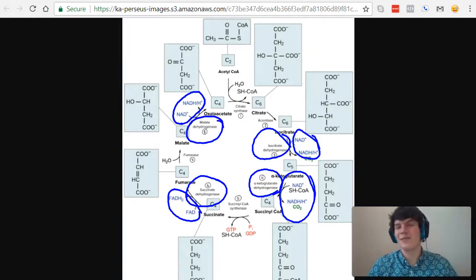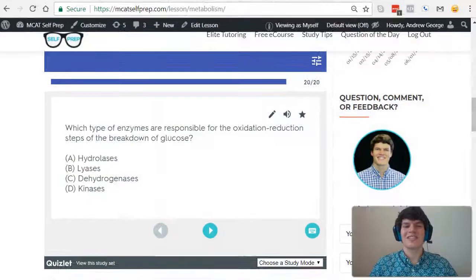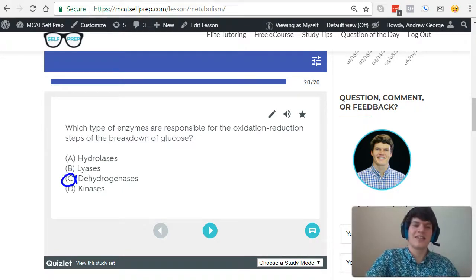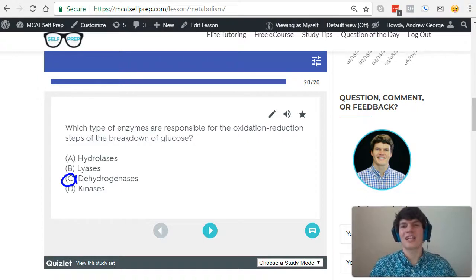The commonality among all these enzymes is that they are dehydrogenase enzymes. Let's take a second look at the question stem. Which type of enzymes are responsible for the oxidation-reduction steps of the breakdown of glucose? It's going to be dehydrogenases. Dehydrogenases help transfer electrons to NAD-plus and FAD.